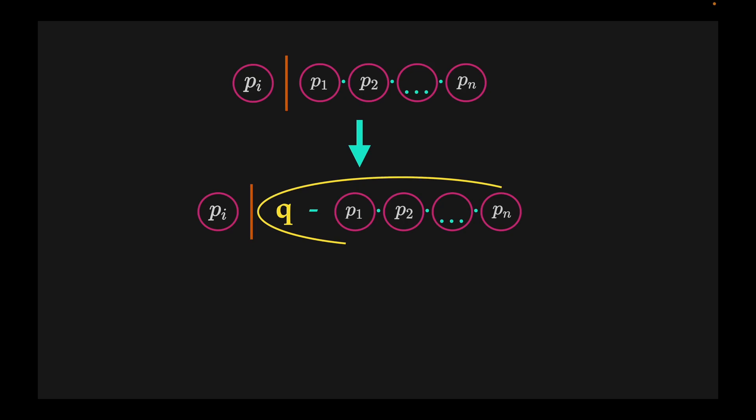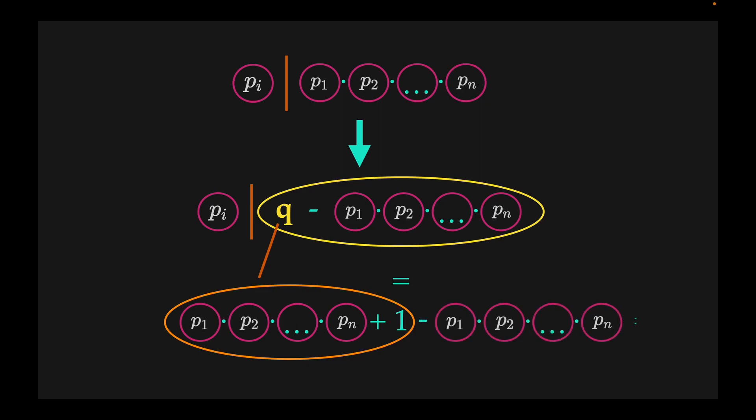But when we plug in our definition of q, we will find that this difference is equal to one. This means that the prime number pI is a divisor of one.